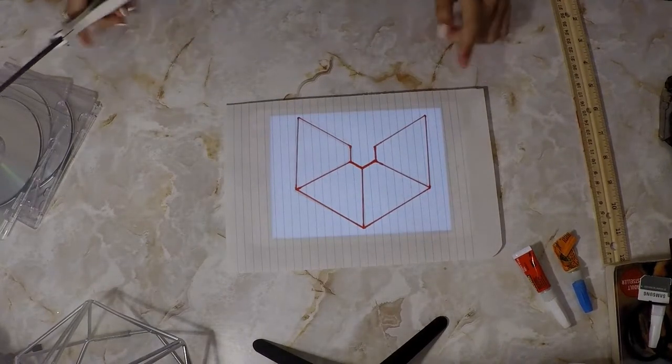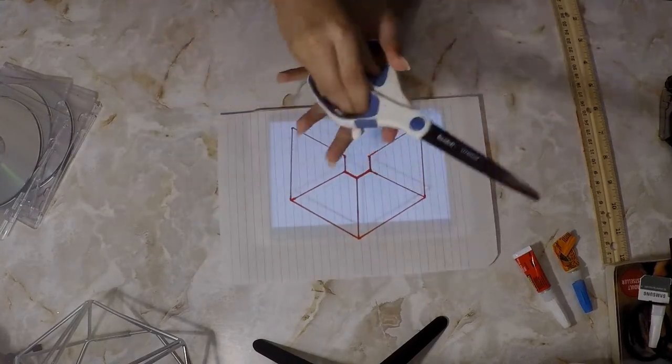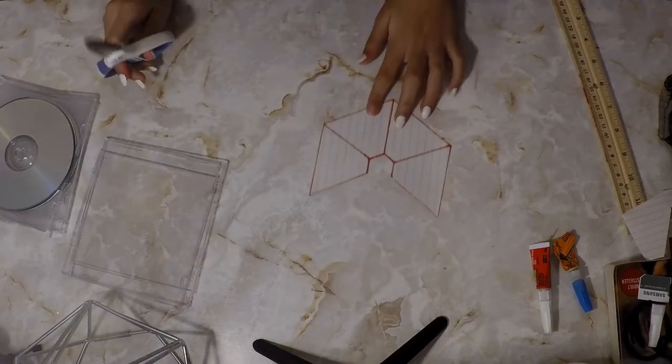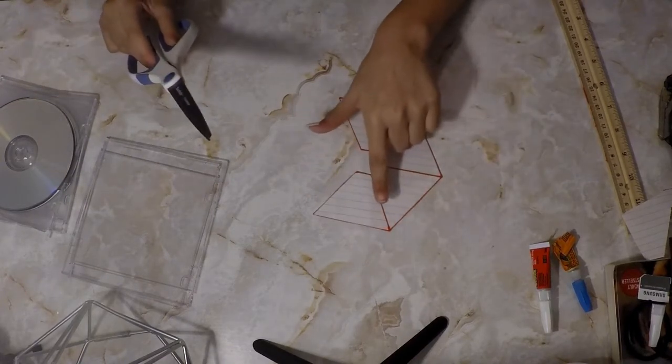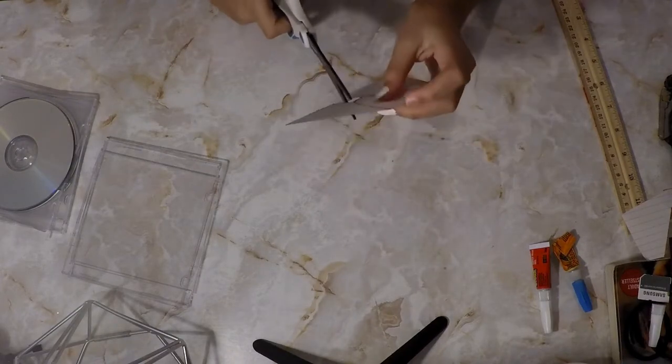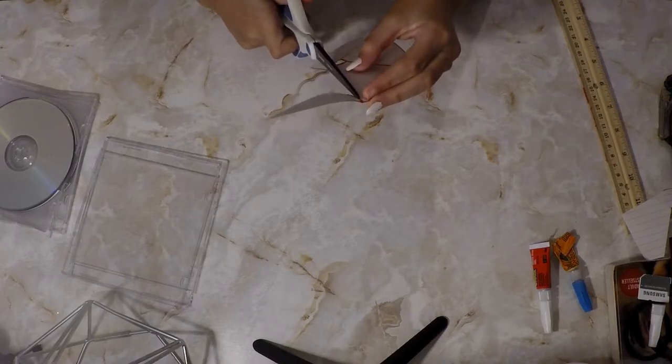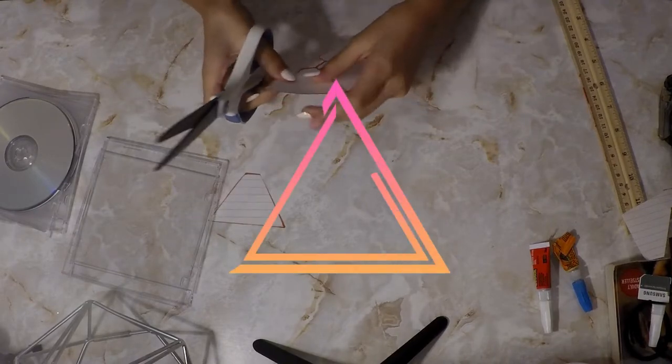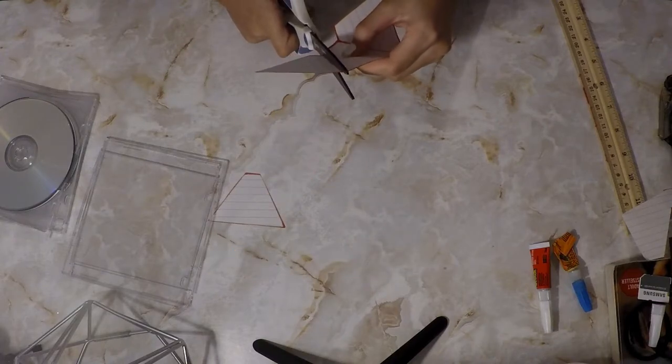We are going to cut each one individually. So now this is the time where you get to use your scissors. Okay guys, so now that we have cut out the outline, we are going to cut each one individually right here where the line is. So let's go ahead and do that. And make sure it is exact, because if it's not, your pyramid is not going to look right. And you want to make sure it looks good.